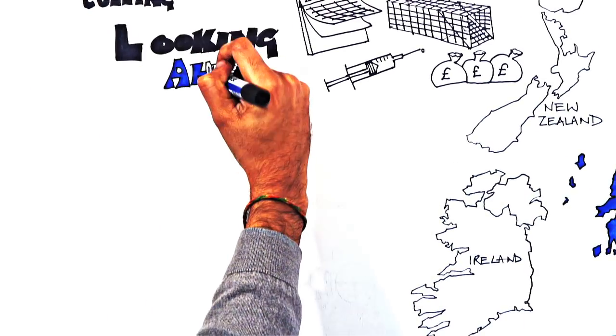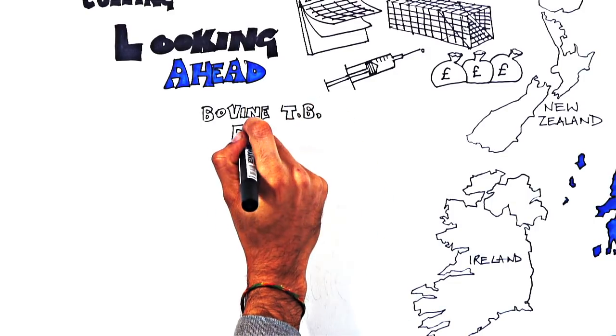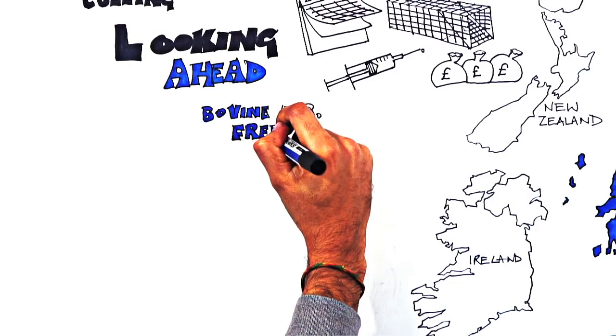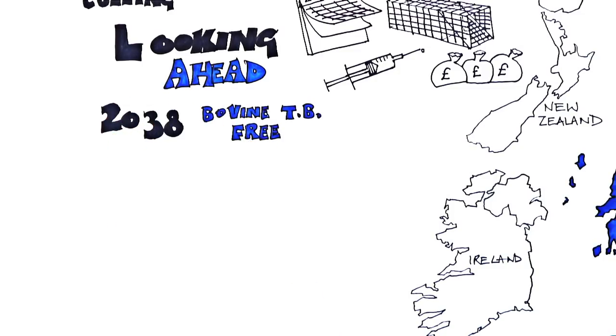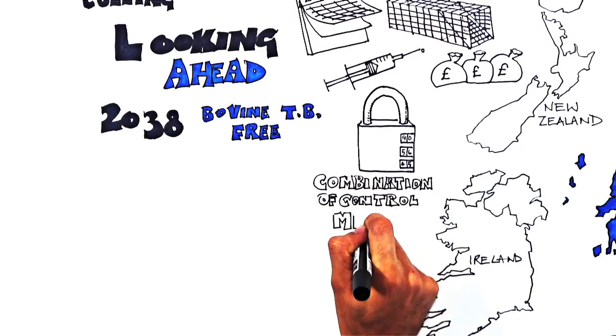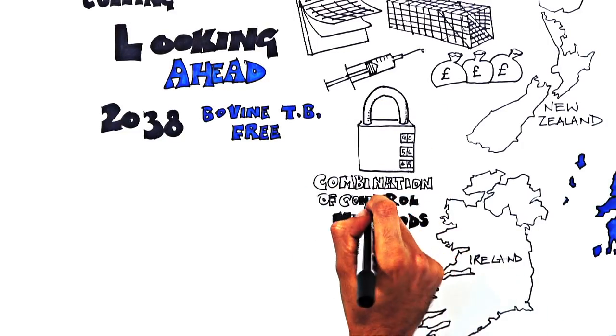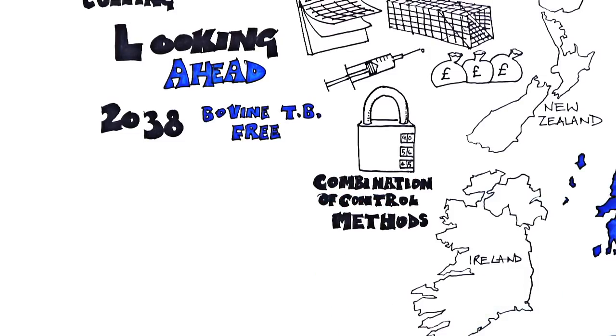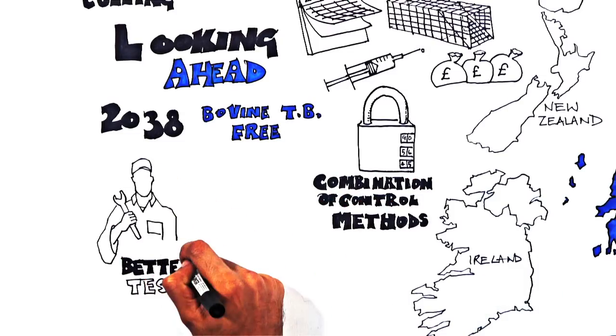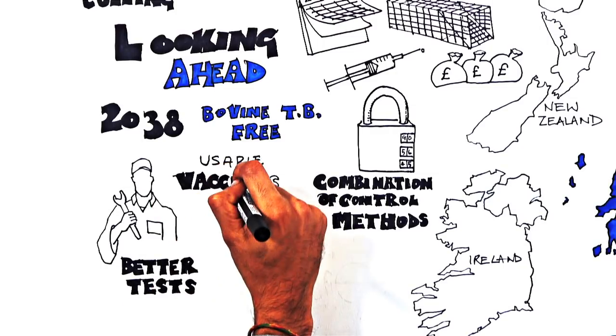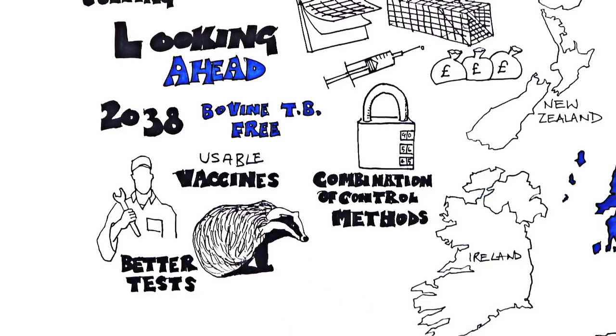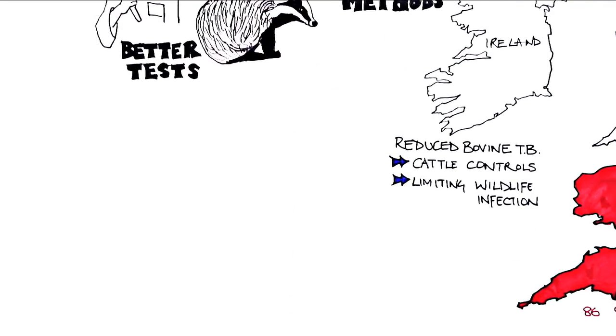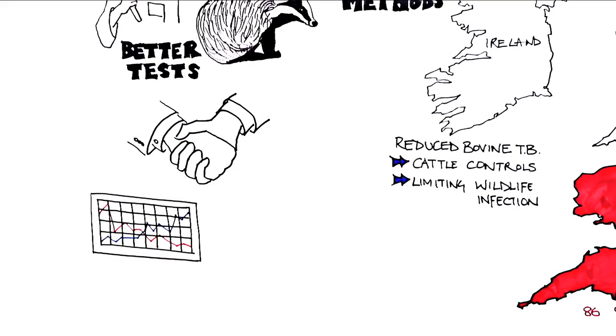Looking ahead, the government has published a strategy for England to become bovine TB free by 2038, which builds on existing measures and includes the following new elements: choosing the most suitable combination of control methods to tackle different levels and sources of infection in different areas, developing better tests, usable vaccines and new ways of tackling TB infection in badgers, and reviewing the way in which bovine TB controls are managed, delivered and funded.